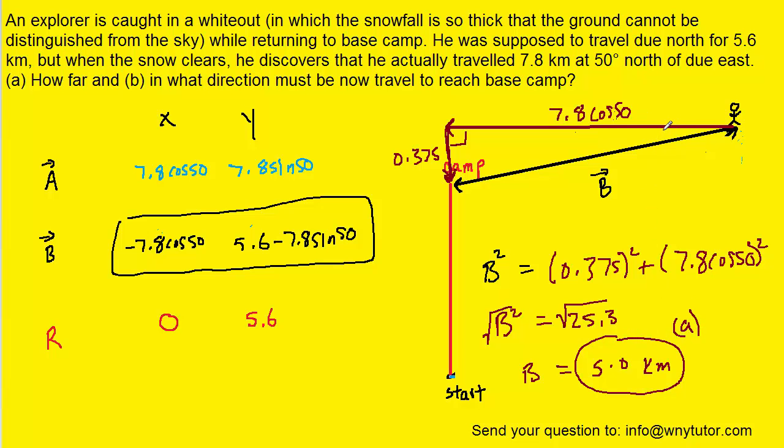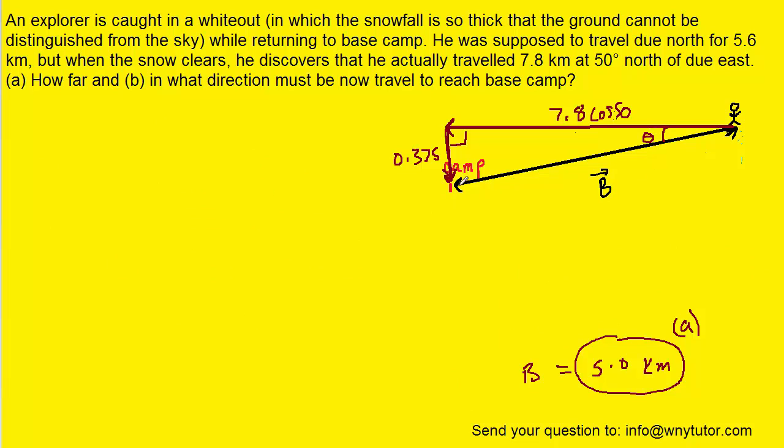And now part B we need a direction. Well we can define that direction by finding this angle right here. And if we study this triangle carefully we can see that we can use the tangent function which is equal to the opposite side divided by the adjacent. Now the opposite side would be the 0.375. And the adjacent is that 7.8 cosine of 50. Now to actually find the angle what we have to do is take the inverse tangent of both sides of this equation. On the left side the inverse tangent and the tangent will cancel. So we'll have the angle equaling the inverse tangent of that 0.375 divided by 7.8 cos 50, which is about 0.075. So when we take the inverse tangent of that we get about 4.3 degrees.